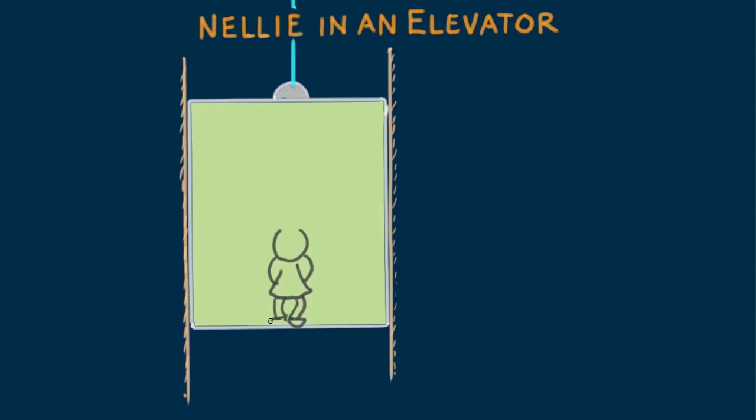How would this problem be different if Nellie were simply standing inside the accelerating elevator, never mind the hanging rope? The answer is not all that different. For the case of standing, the support force is not tension T in a rope, but N, the normal support force by the elevator floor.